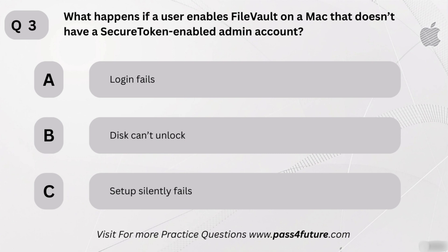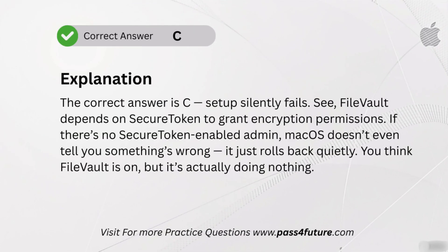Let's try this one. What happens if a user enables FileVault on a Mac that doesn't have a secure token enabled admin account? A. Login fails. B. Disk can't unlock. C. Setup silently fails. The correct answer is C — setup silently fails. FileVault depends on secure token to grant encryption permissions. If there's no secure token enabled admin, macOS doesn't even tell you something's wrong. It just rolls back quietly. You think FileVault is on, but it's actually doing nothing.